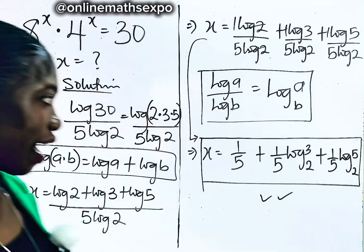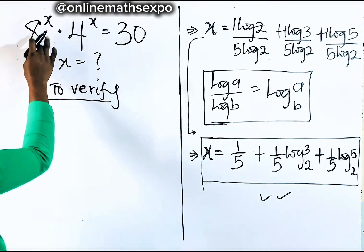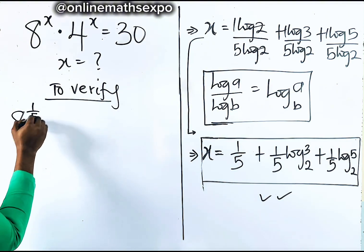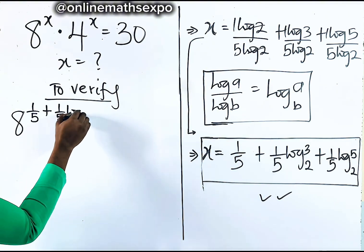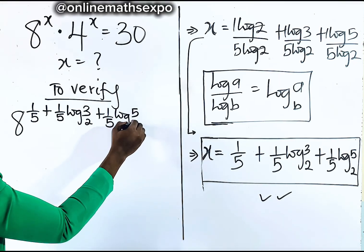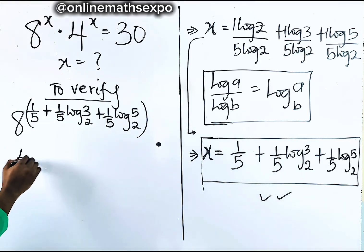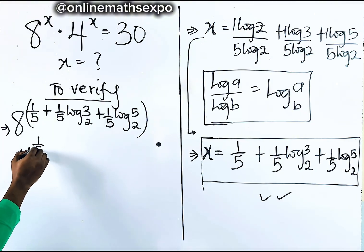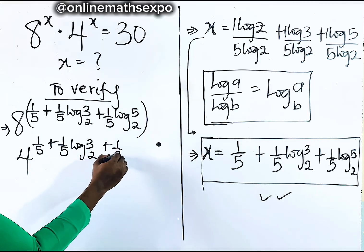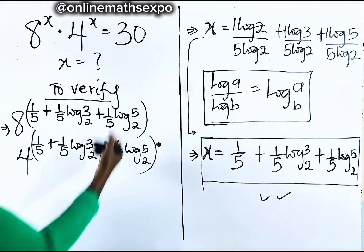Let's verify together. We have 8 to the power of x, where x is one fifth plus one fifth log 3 base 2 plus one fifth log 5 base 2, multiplied by 4 to the power of one fifth plus one fifth log 3 base 2 plus one fifth log 5 base 2. We want to know if this gives us 30.